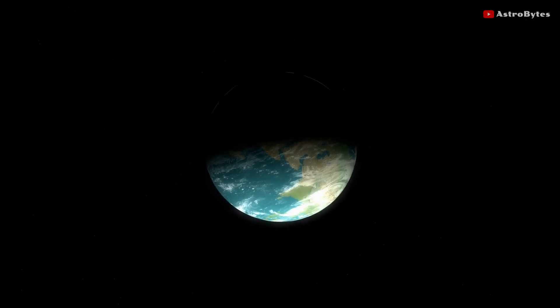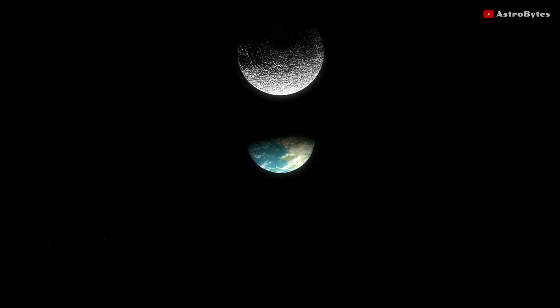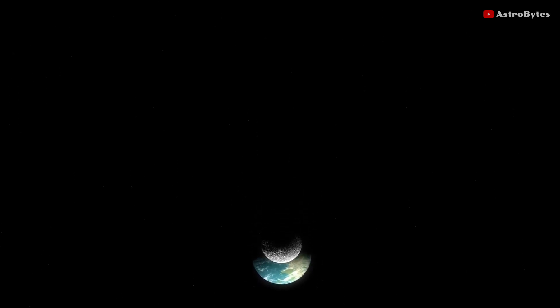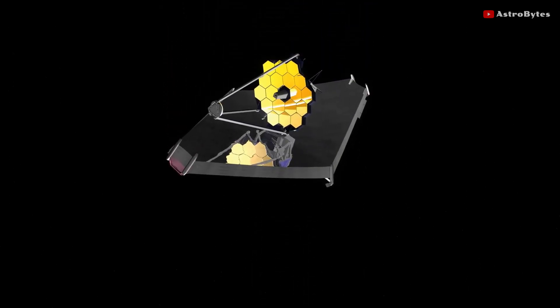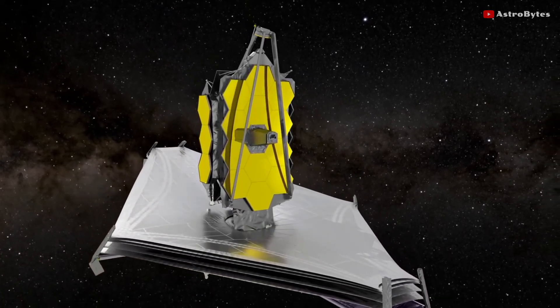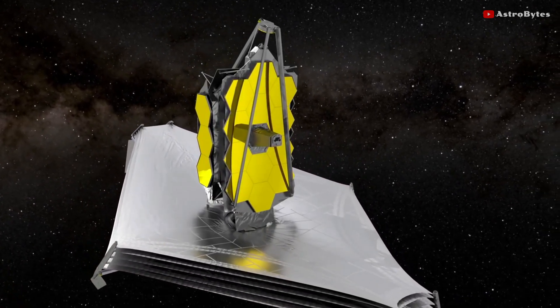The telescope is parked in a gravitationally stable region of space, generated by the interaction between Earth and the Sun, called Lagrange Point 2, or L2. These stable pockets are ideal for spacecraft to hang out, since they minimize fuel consumption.